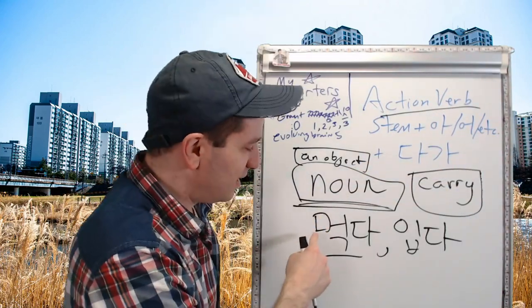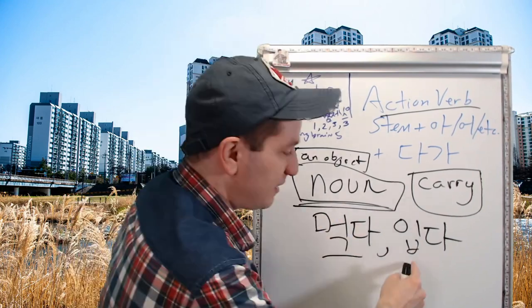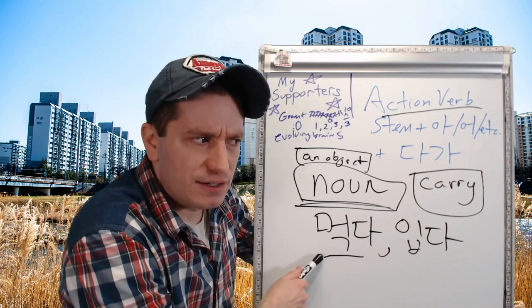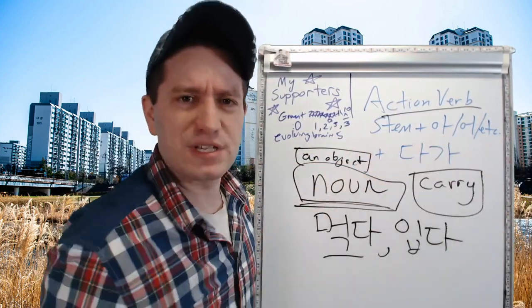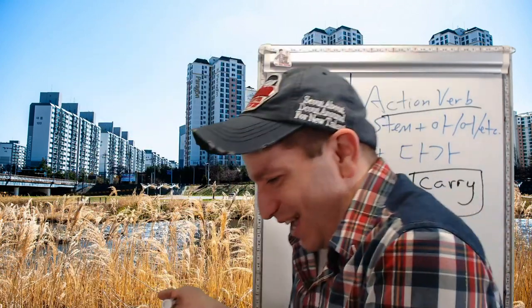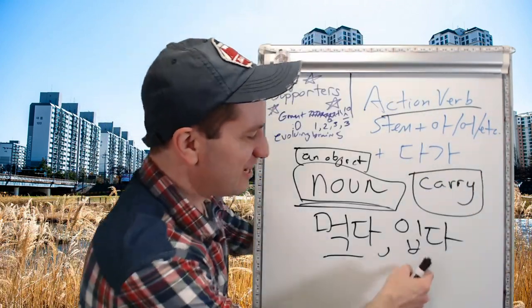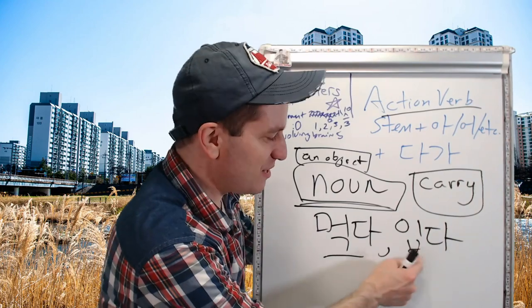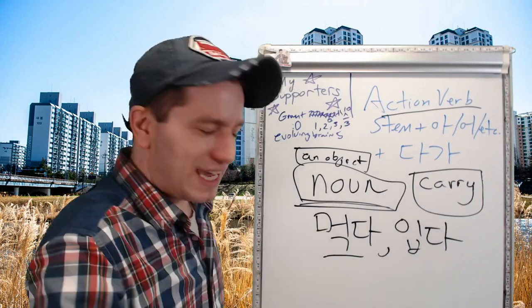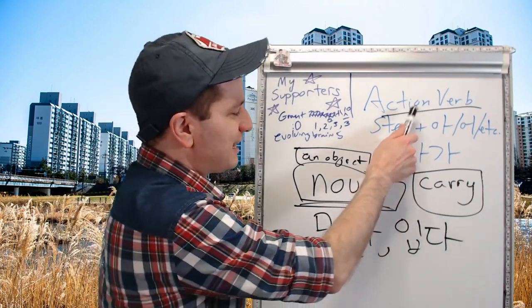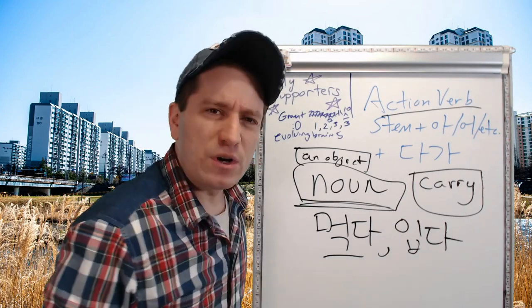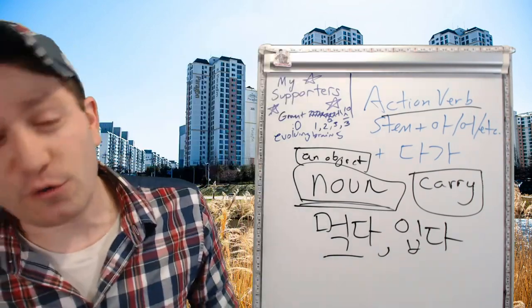You cannot say 먹어다가 or 입어다가 with clothes. Once you eat something, it's gone — you're not going to be able to carry it somewhere else or bring it to a second location. 피자를 먹어다가 친구한테 줬어요 doesn't make any sense. And you can't use 입다 either, for the same reason — you're just wearing your clothes and you're not bringing something to someone. So you can't use it with verbs that can't take an object, but also not with any verbs that would dispose of the object.